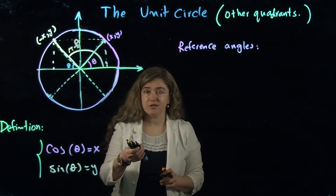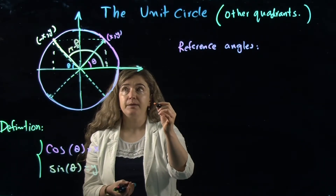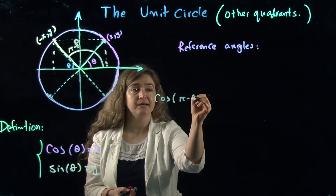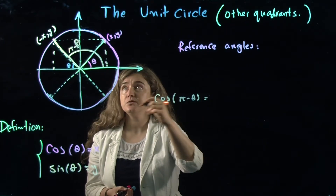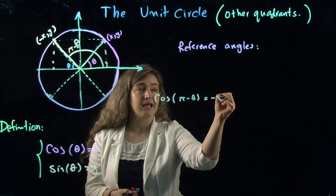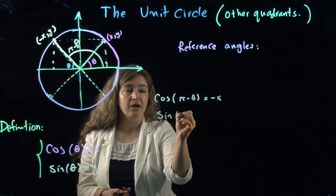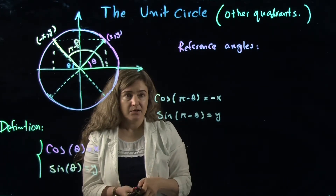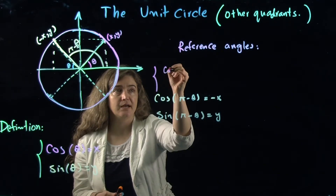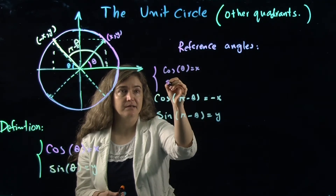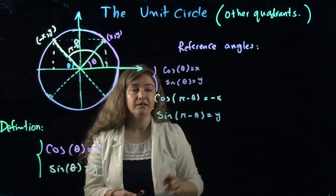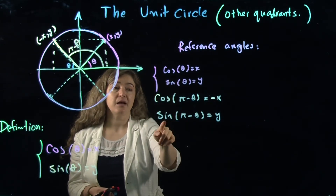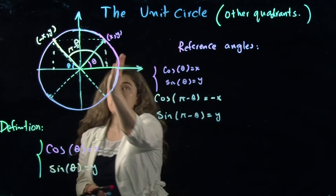So in the second quadrant, cosine of (π minus theta) is equal to negative x, and sine of (π minus theta) is equal to y. Starting from cosine theta equals x and sine theta equals y, cosine of (π minus theta) equals negative x, and sine of (π minus theta) equals y — by the symmetry.